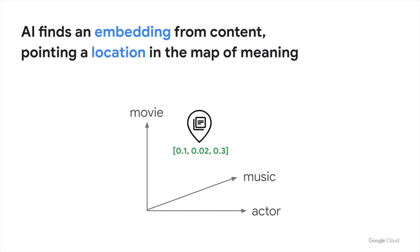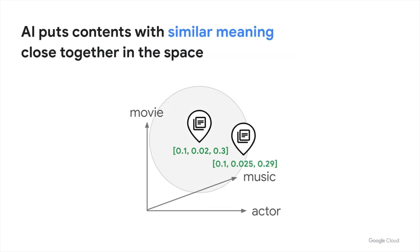Let's take an example where a text discusses movies, music, and actors with a distribution of 10%, 2%, and 30%, respectively. In this case, the AI can create an embedding with three values — 0.1, 0.02, and 0.3 — in three-dimensional space. AI can put content with similar meanings closely together in the space. Note that this is a simplified example. In reality, embedding space may have hundreds or thousands of dimensions that can represent almost infinite numbers of nano-categories of the content.